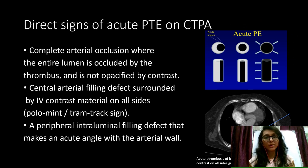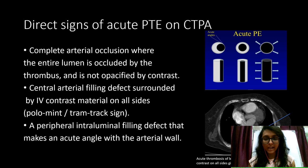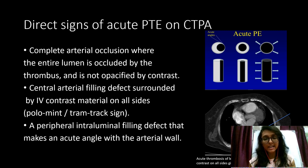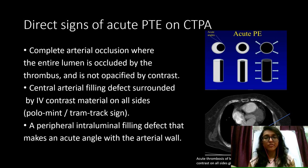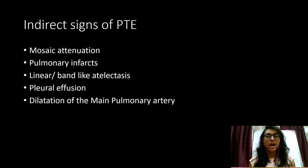There are direct and indirect signs of pulmonary thromboembolism on CTPA. Direct signs include: complete occlusion of the artery with non-opacification of the vessel; a centrally dislodged thrombus causing a central filling defect with peripheral contrast opacification, known as the polo-mint sign or tram-track sign; and a peripheral thrombus forming an acute angle with the vessel wall. Indirect signs include mosaic attenuation, pulmonary infarcts, linear or band-like atelectasis, pleural effusion, and dilatation of the main pulmonary artery.